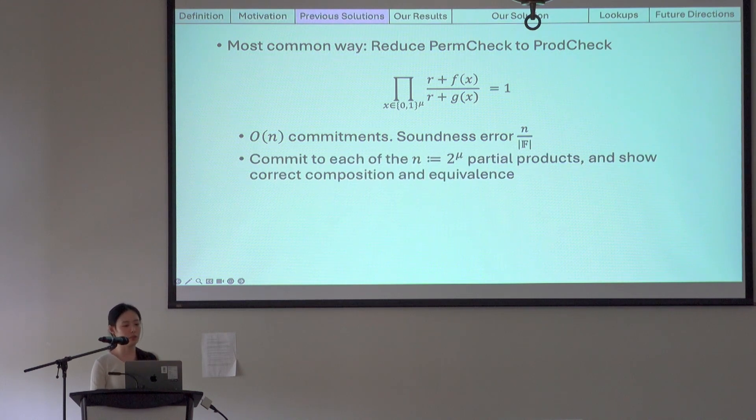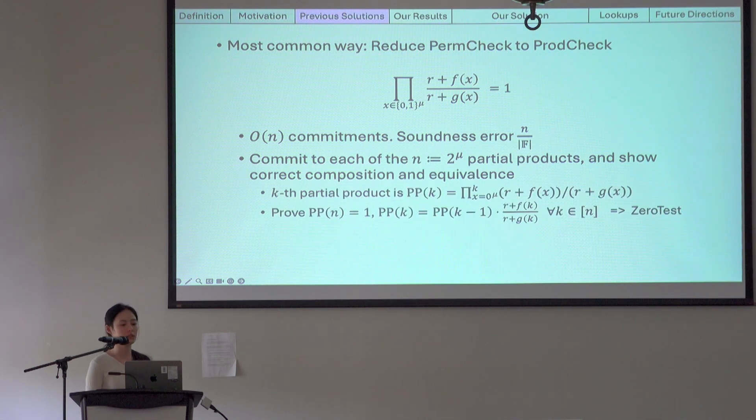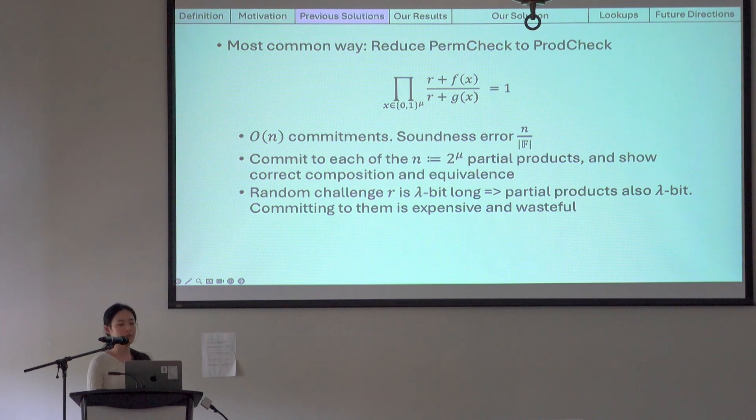Well, this is because to prove it, we need to commit to all n partial products and show correct composition and equivalence. What this means is that let's call the k partial product pp of k. It is the product of these fractions from x equal to all zeros to x equal to k. And the prover will use a zero test to show that the nth partial product is one, and every intermediate partial product is indeed the previous partial product times the kth fraction.